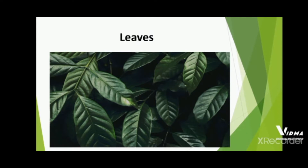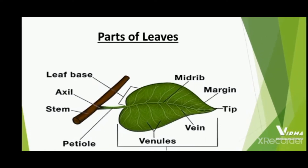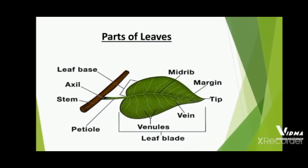Over here you will see the parts of the leaf: the midrib, which is the center part of the plant; side margin; tip; vein; petiole; stem; axle; and leaf base.